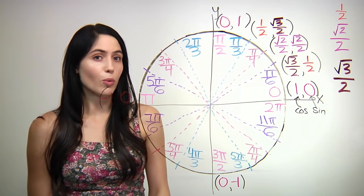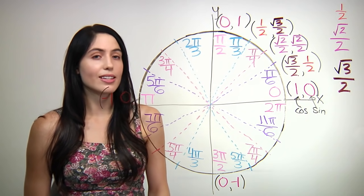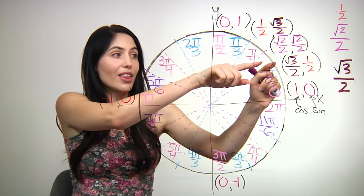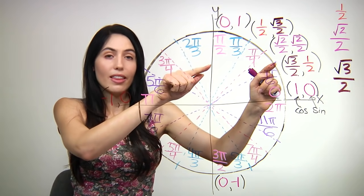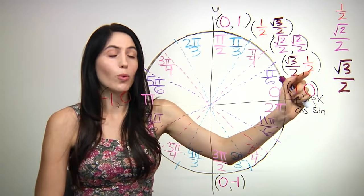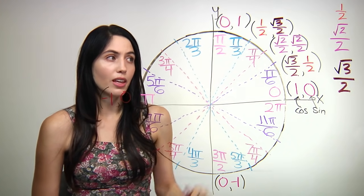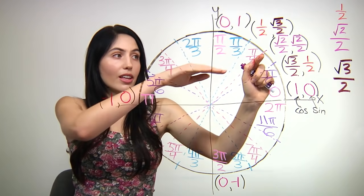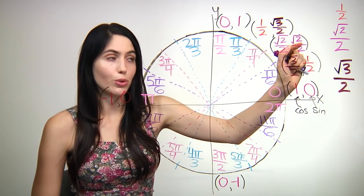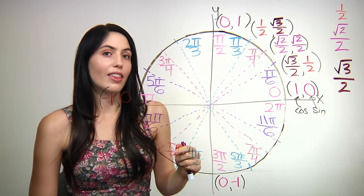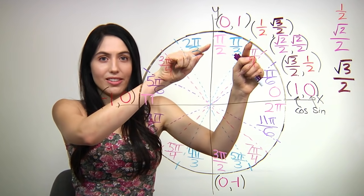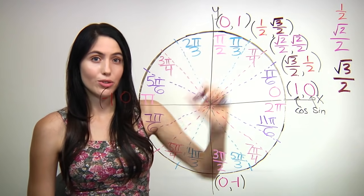Now let's fill in the y values for those points. It's the exact same idea. For the angle pi over six, the y distance — the height — is the lowest of those angles, so it needs to be one half, the smallest value. At pi over four, the height, the y distance, is the middle size, so it needs to be root two over two. And then at pi over three, the y distance — the height — is the largest of the angles, so it needs to be root three over two.